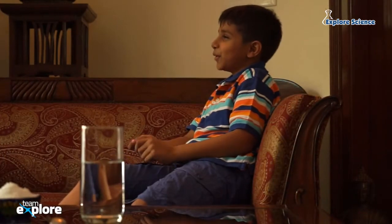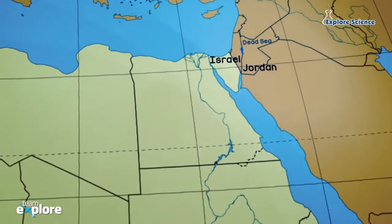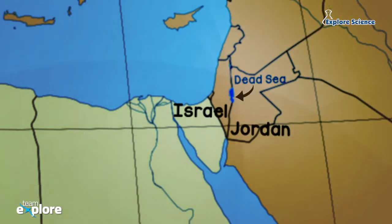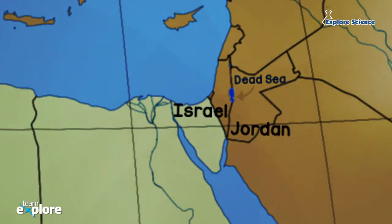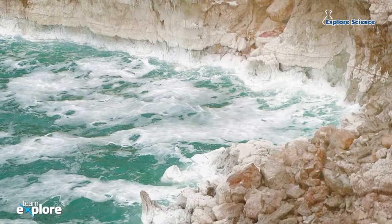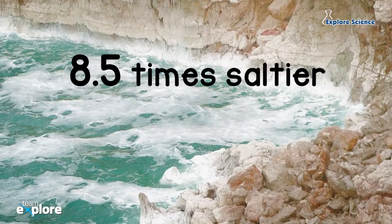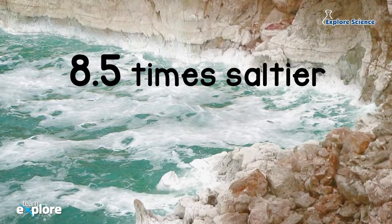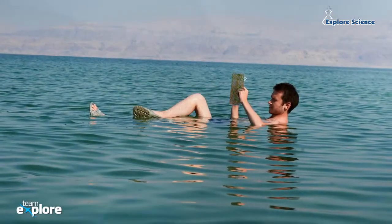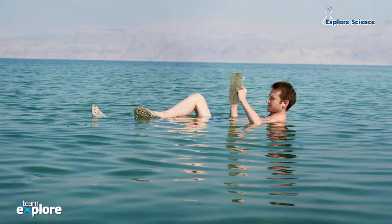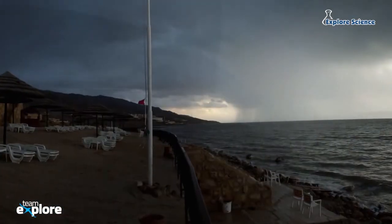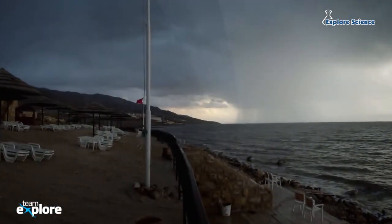Jain, have you heard about the Dead Sea? It's also called the Salt Sea. It's a lake bordering Jordan and it's rare. The Dead Sea is over 8.5 times saltier than even the ocean. Its shores are 1,388 feet below sea level, making it the lowest point on land.